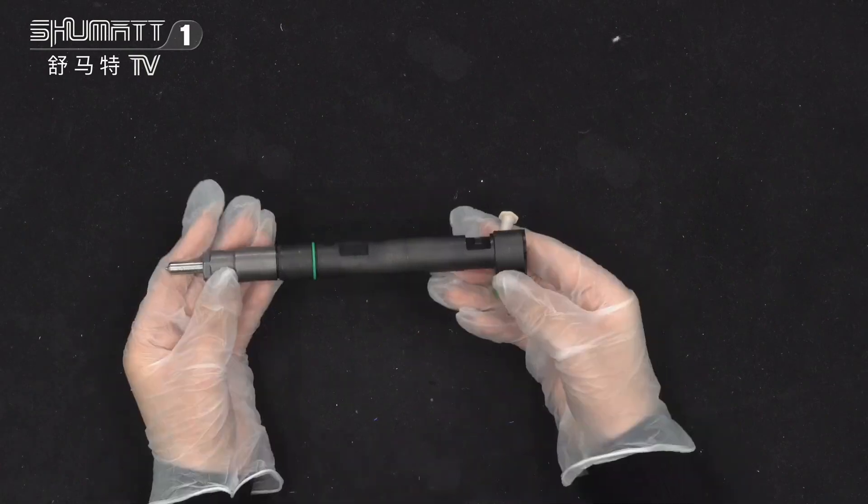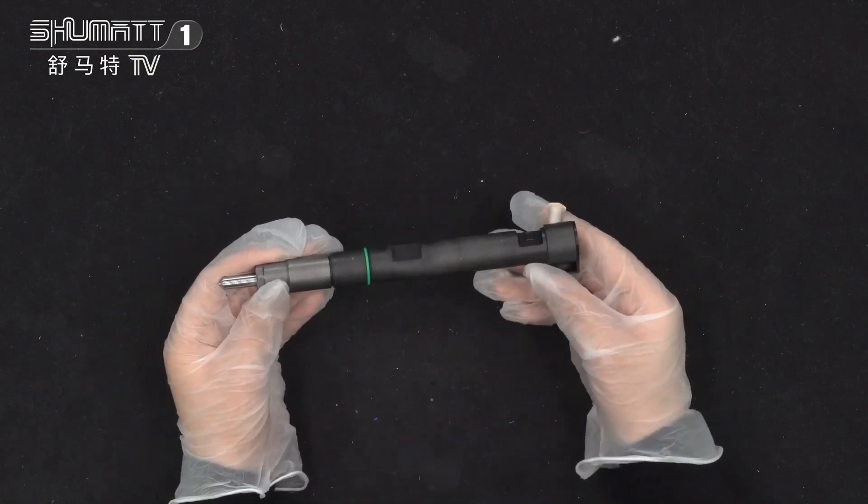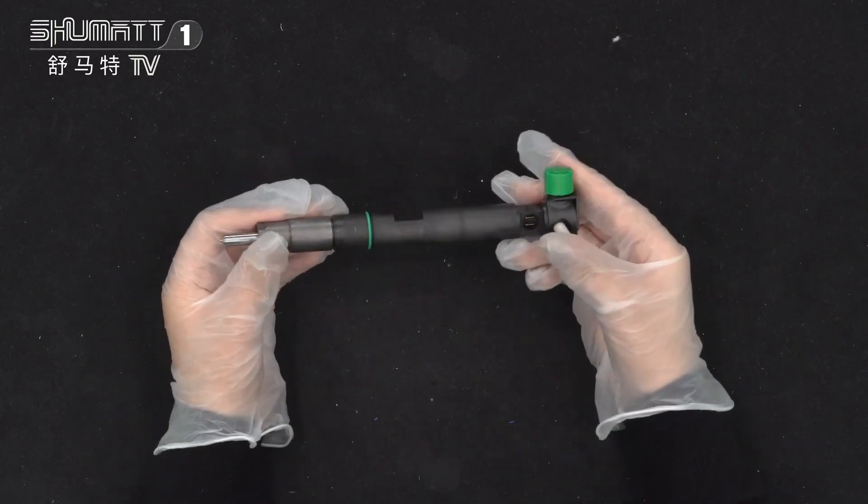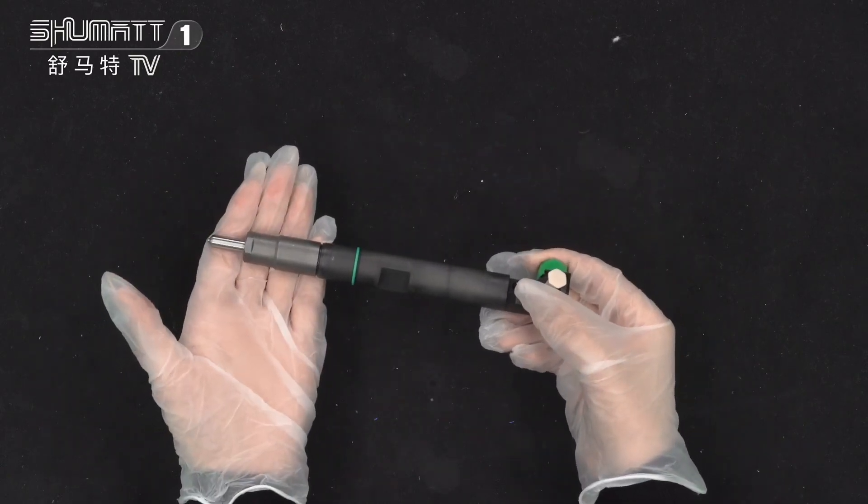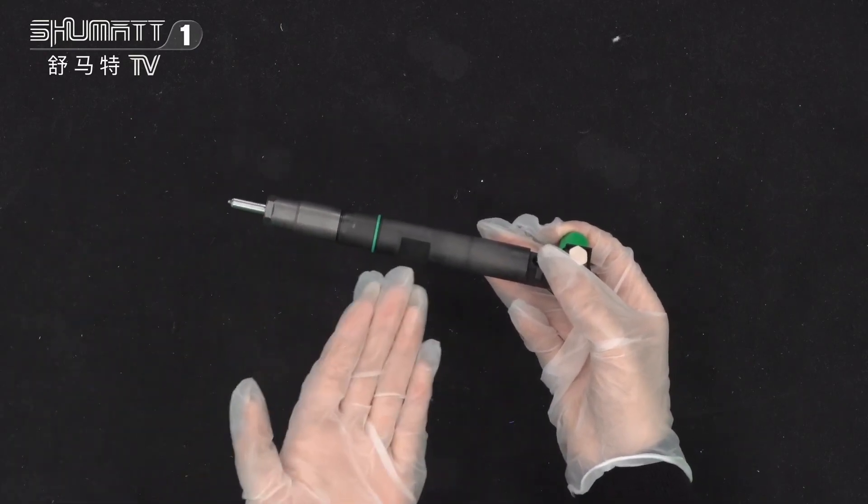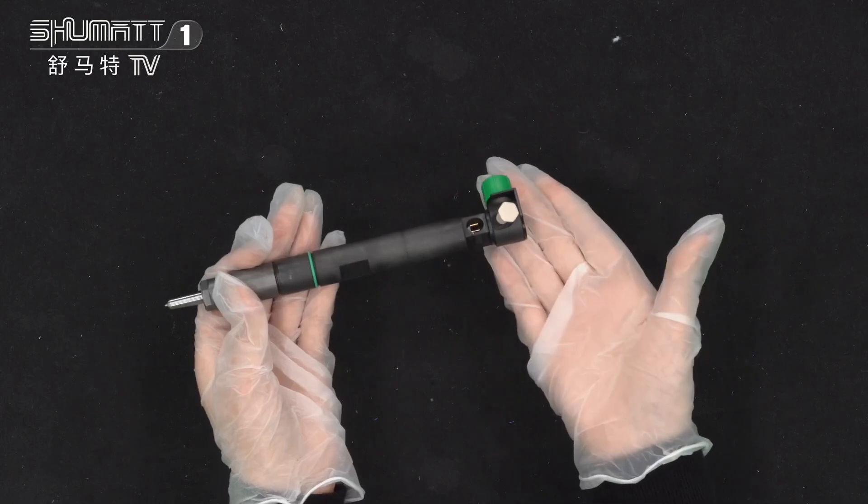Each fuel part is of high quality. And about the warranty time, we support six months, so this quality is guaranteed, you need not worry about that. And it can be separated into injector nozzle and valve assembly, this solenoid valve.